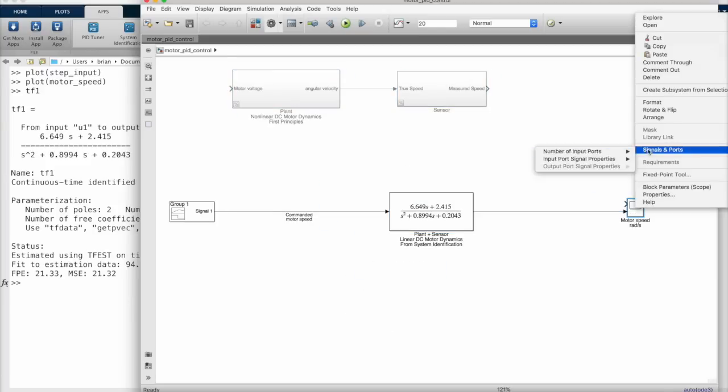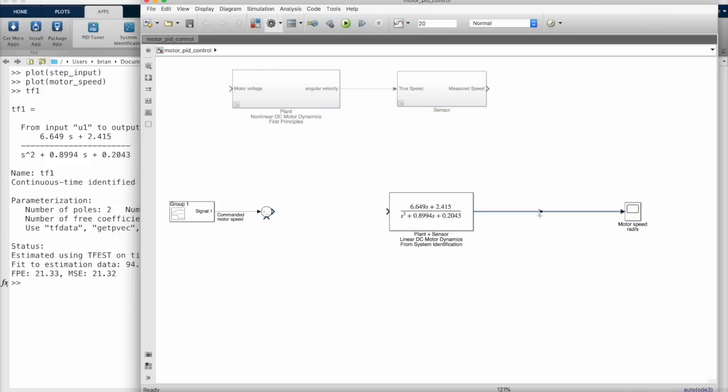So you can see how simple it can be to create a model using system identification rather than slugging through a model with first principles. And now that we have this model, we could wrap a PID controller around it and use the linear model to tune the gains.